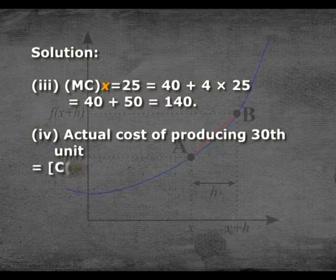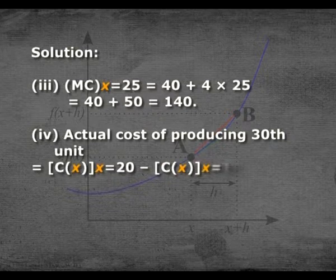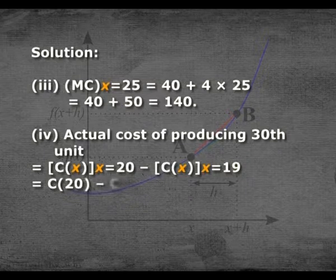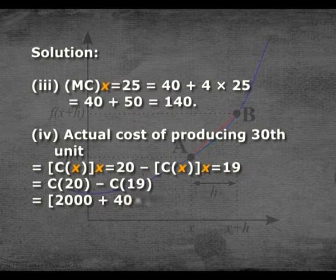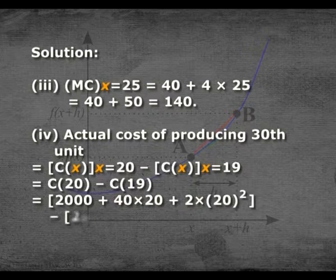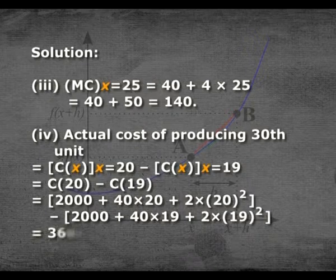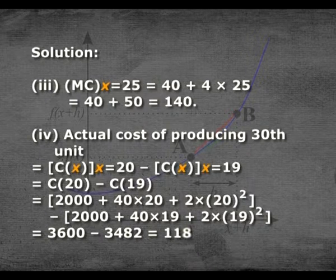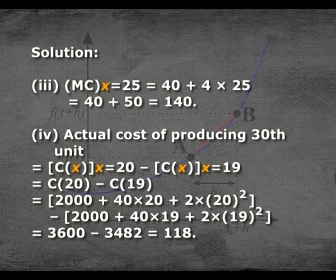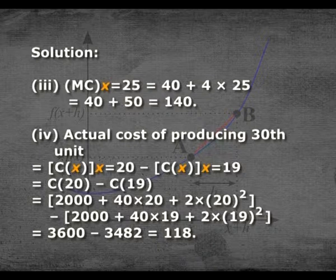The actual cost of producing the 20th unit equals c(20) − c(19). So c(20) = 2000 + 40(20) + 2(20²) = 3600, and c(19) = 2000 + 40(19) + 2(19²) = 3482. Therefore actual cost = 3600 − 3482 = 118.